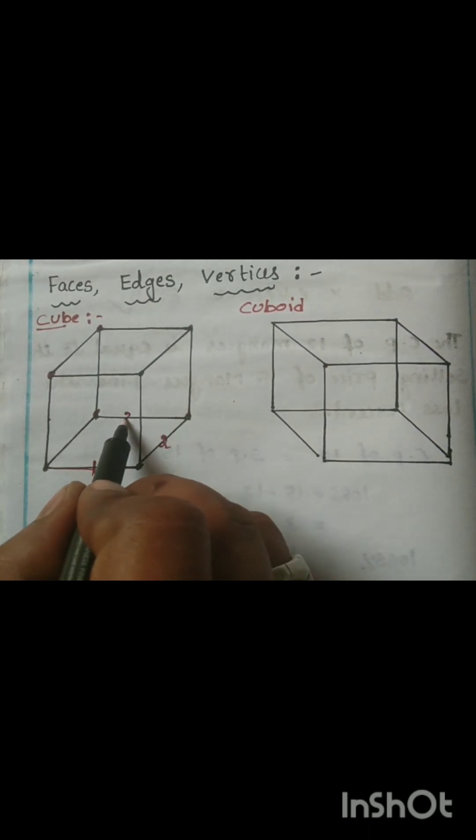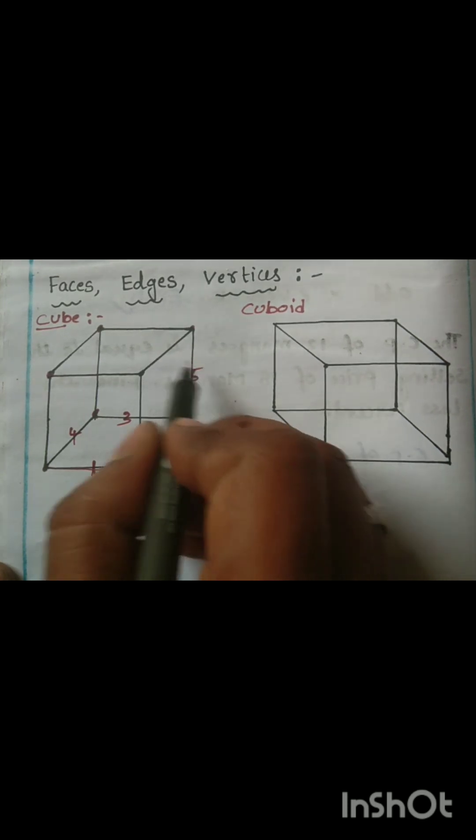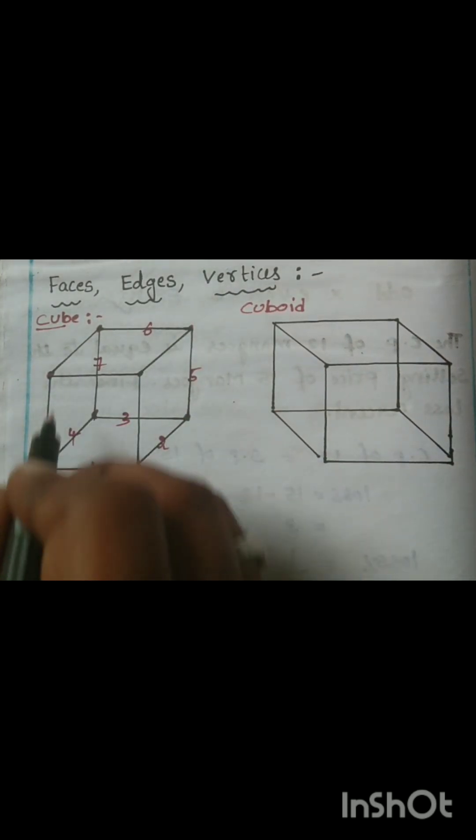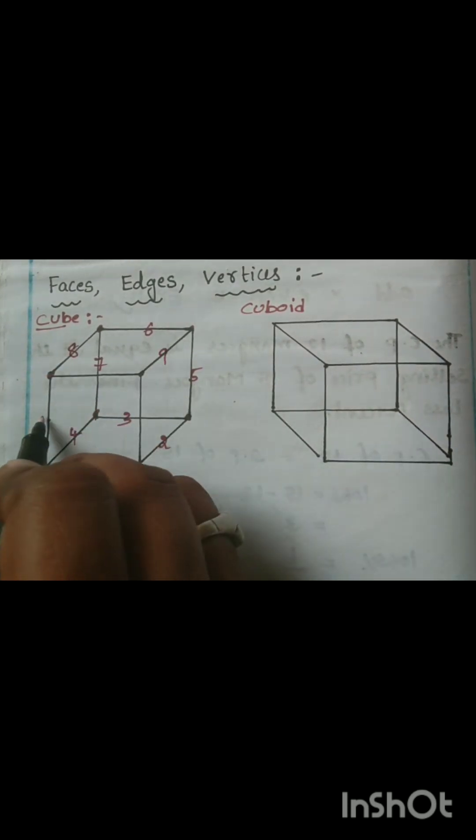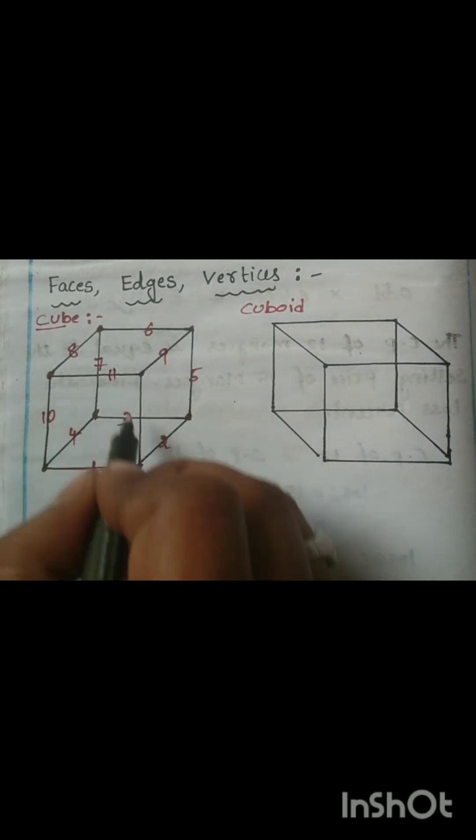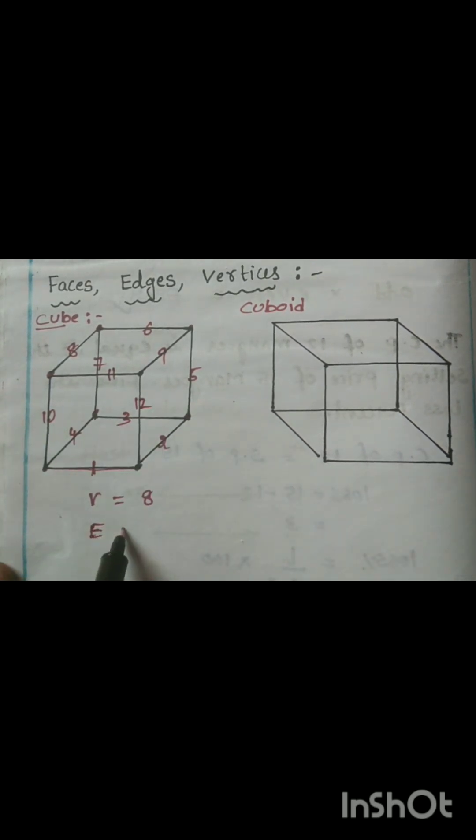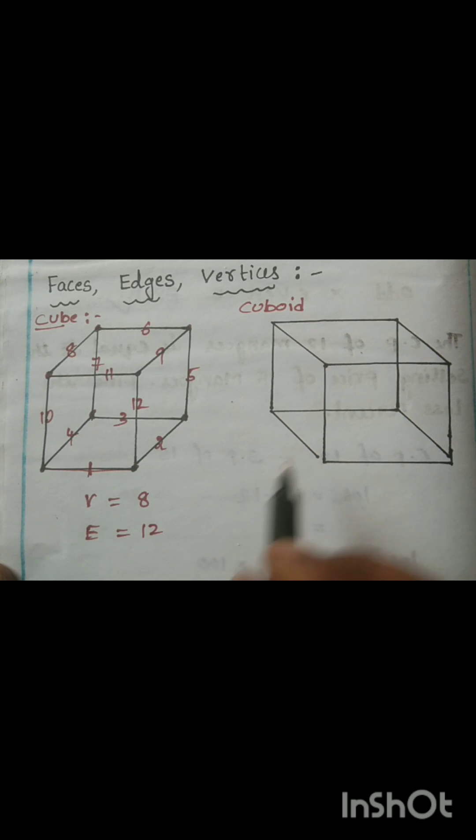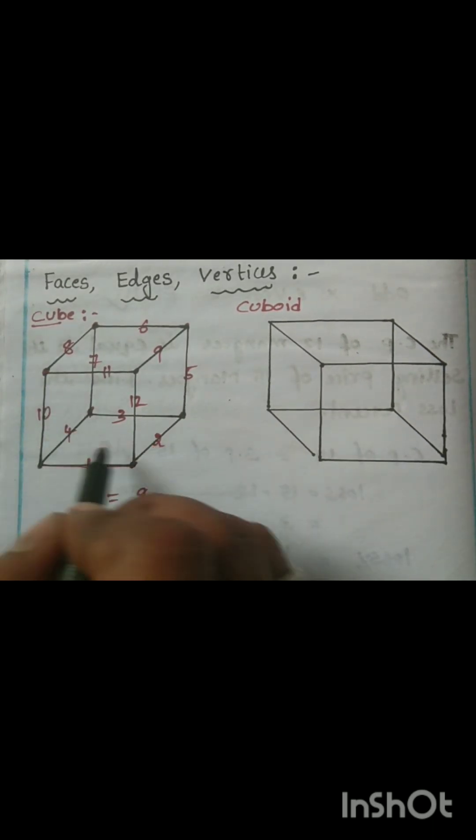Next let us find edges. 1, 2, 3, 4, 5, 6, 7, 8, 9, 10, 11, 12. So edges are 12.